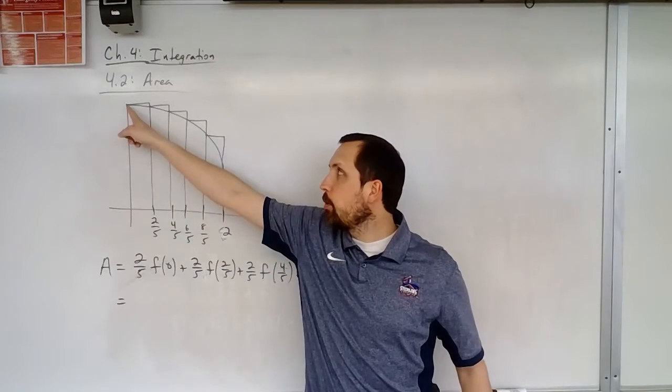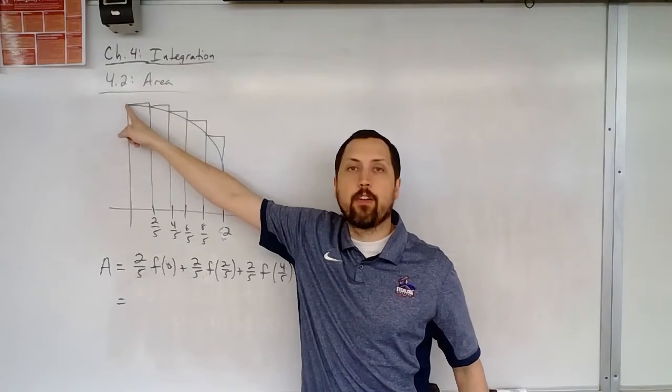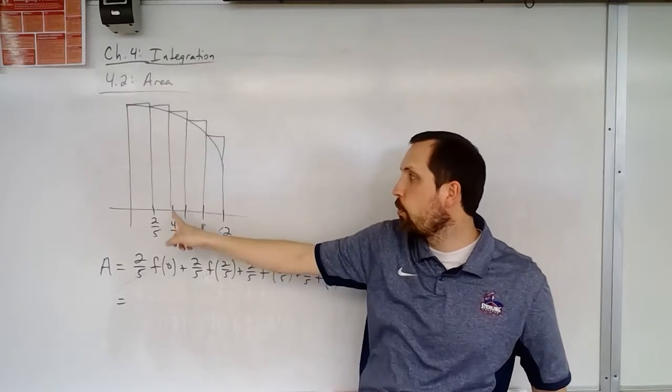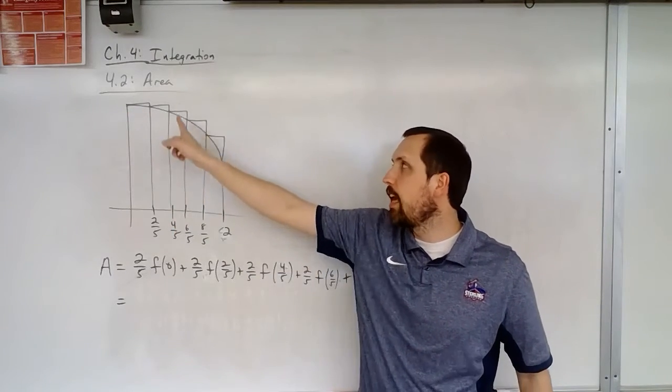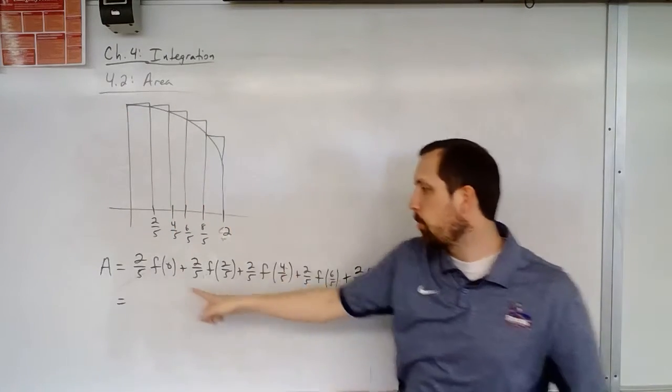So here again, we're using left endpoints. We're going to evaluate the function at zero, at two-fifths, four-fifths, six-fifths, and eight-fifths. That determines the height of all of these, so we have this.